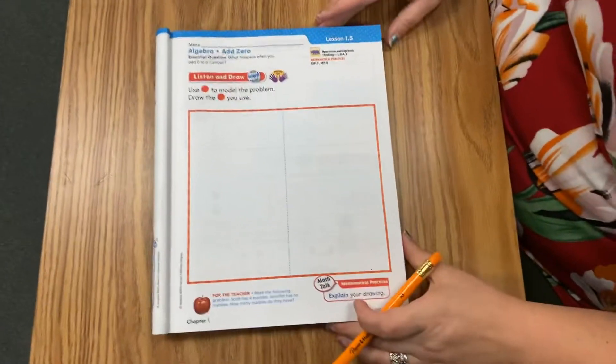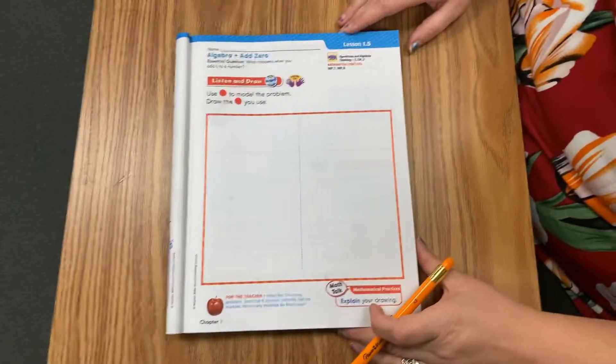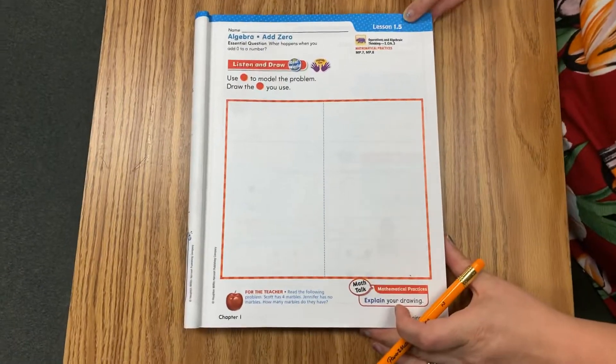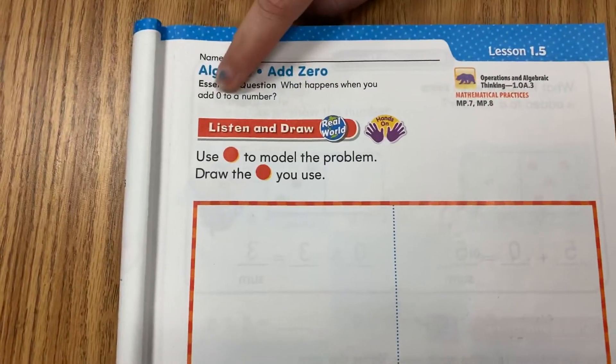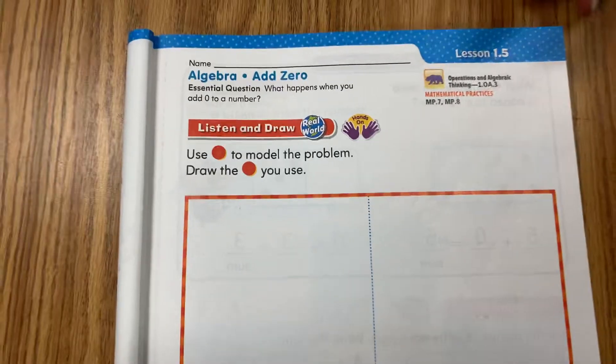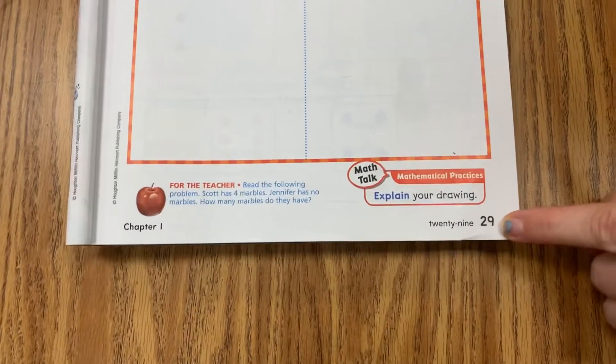Hi guys, and welcome back. Happy Friday. We're going to be working with GoMath again, lesson 1.5. We are going to see what happens when you add zero to a number. So can you please make sure you're on page 29 with me?